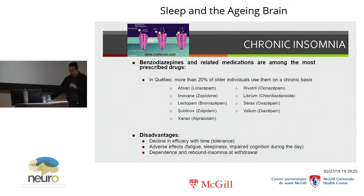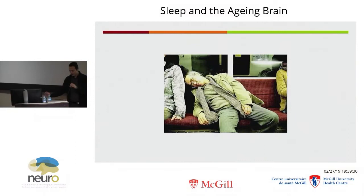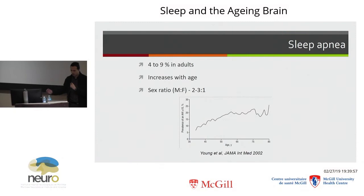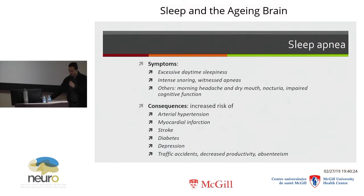Now, people who sleep too much — this is called hypersomnia. The most common cause when younger is simply not sleeping enough. But as we age, one of the concerning causes of hypersomnia is sleep apnea. Sleep apnea is very common — about 5 to 10% of the population — and unfortunately, like insomnia, it increases with age, reaching about 20-25% of the population. This time, males are more susceptible than females. It's also worth noting that sleep apnea and insomnia often coexist and should be treated together.